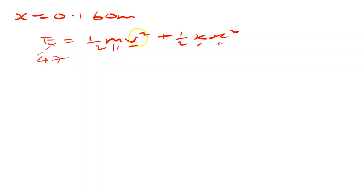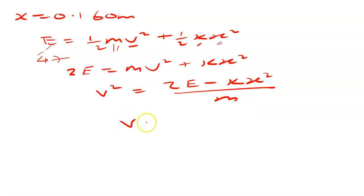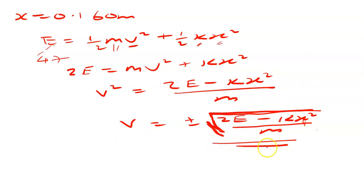It is just a matter of making velocity the subject of the formula and plugging in the values. Making v the subject: 2E equals mv squared plus Kx squared. Moving Kx squared to the other side and dividing by m, we get v squared equals (2E minus Kx squared) over m. So v equals plus or minus the square root of (2E minus Kx squared) over m, all under the root. Plugging in: E is 47, K from part A, x is 0.16, and m from part C — this gives the velocity at 0.16 meters.